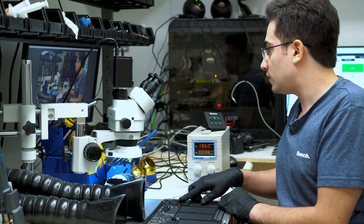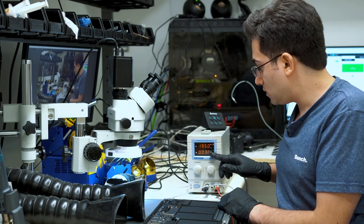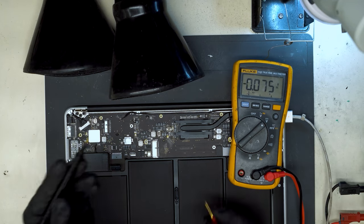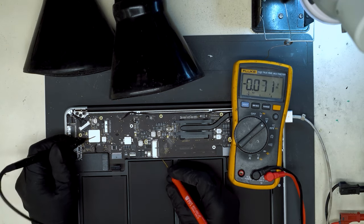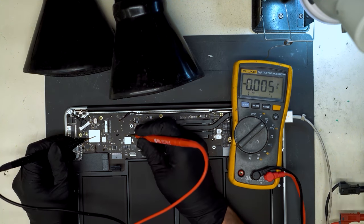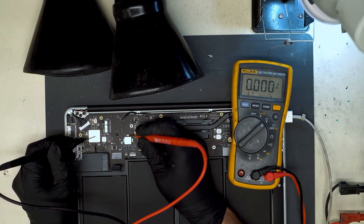You can see there's no fan spin and we're drawing 36 milliamps. So the first thing we're going to do in this case, we're just going to take a measurement on the main power rail PPBus G3 hot. We're actually getting zero volts on PPBus.